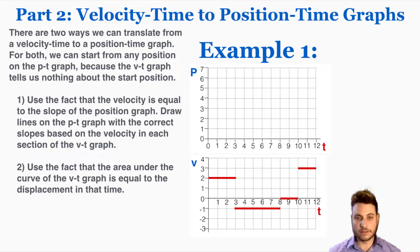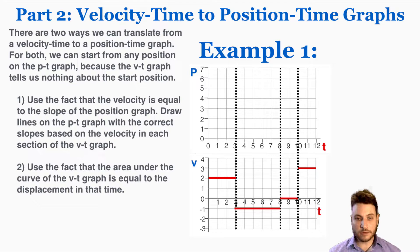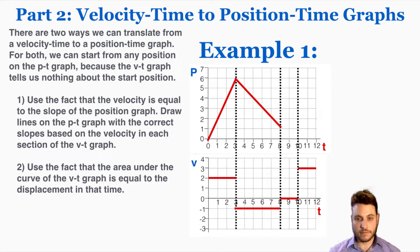Starting with the first method — using slope equal to velocity — I'll draw vertical lines separating the different sections. There's a velocity of 2 m/s for 3 seconds, so the slope of the position graph is 2 for 3 seconds, giving a line going up 2 for every 1 over. Next, a velocity of negative 1 m/s for 5 seconds means going down 1 for every 1 over for 5 seconds. Then a velocity of 0 gives a flat line, and finally a velocity of positive 3 gives a slope of 3 over 1.